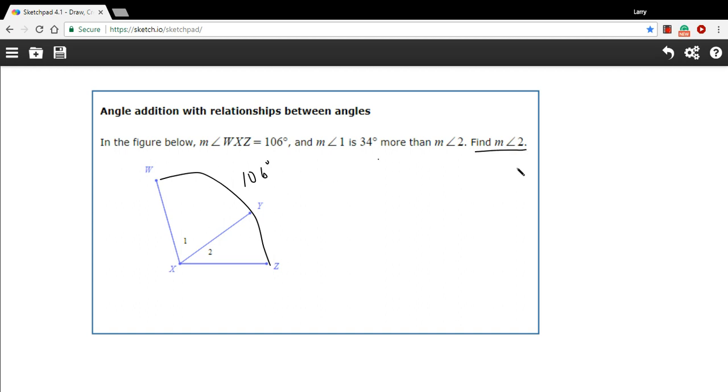With a situation like this, we're going to need to use a variable, and the variable should be the thing that you're trying to find. So I'm going to call the measure of angle 2 just X degrees.